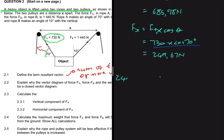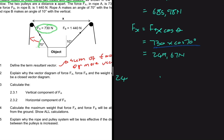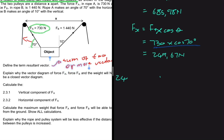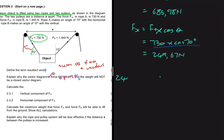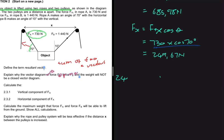Question 2.4 asks us to calculate the maximum weight that force FA and force FB will be able to lift from the ground. What is pulling the object up are the vertical components of FA and FB. If the weight of the object is greater than the sum of these two vertical components, we won't be able to pull it up. So we need to calculate the vertical components of FA and FB and add them together to find the maximum weight.